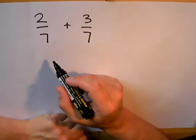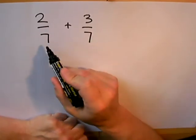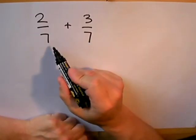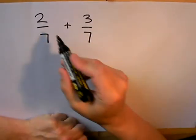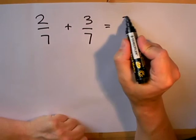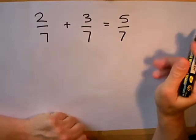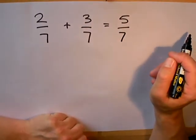Because the denominators, the bottom numbers, are exactly the same, we can go straight ahead and add the top numbers. So two sevenths add three sevenths gives us an answer of five sevenths. It's as simple as that. Add the top numbers together if the bottom numbers are the same.